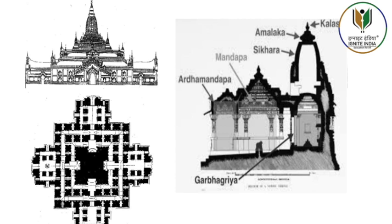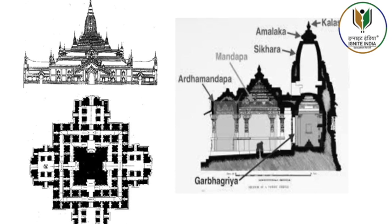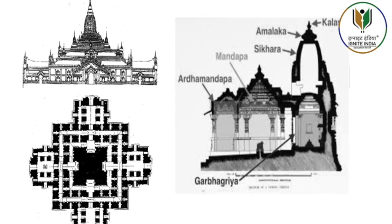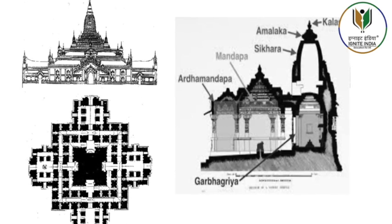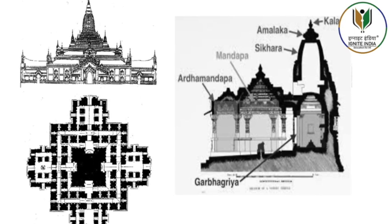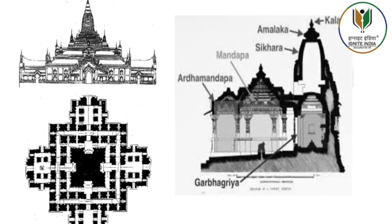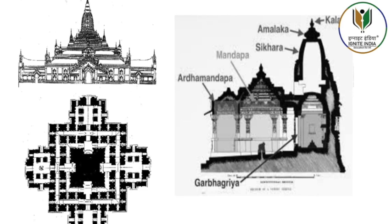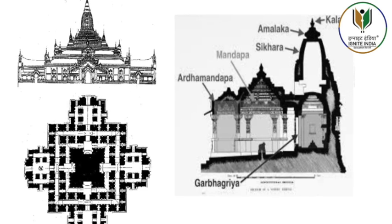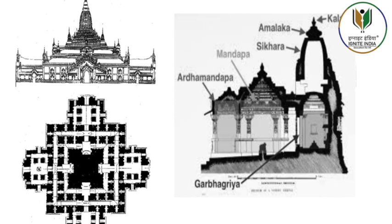Many Hindu temples feature mithuna, embracing couple sculptures, considered auspicious. Usually they are placed at the entrance of the temple or on an exterior wall, or they may also be placed on the walls between the mandapa and the main shrine.